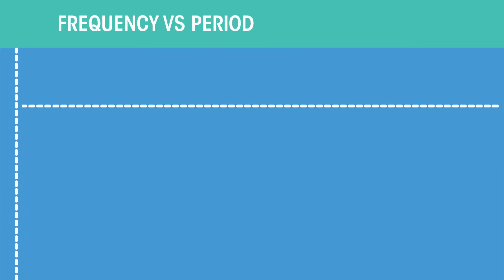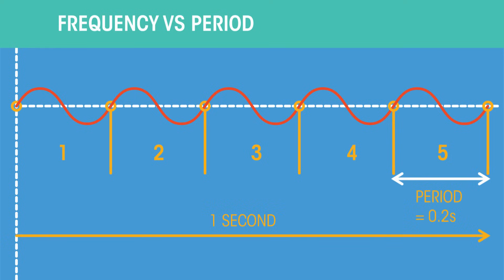The frequency and period are often confused. The frequency refers to how often something happens, whereas the period refers to the time it takes to happen.